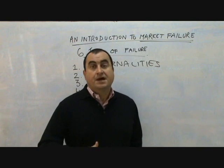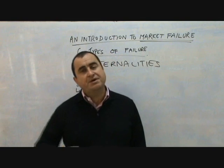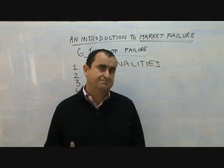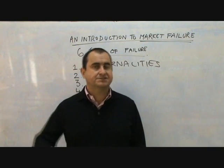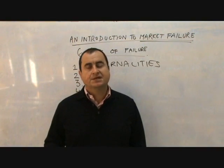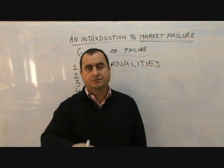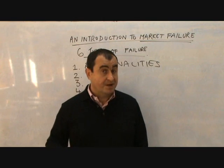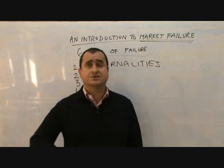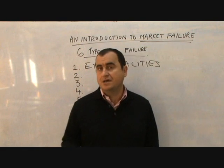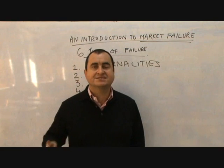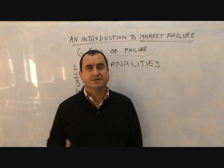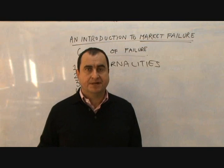When we undertake to buy or sell something, we only consider our private costs and benefits. We don't give any thought to the external costs and benefits. By ignoring external costs and external benefits, we lead ourselves through the market mechanism to the wrong level of output in a market. Some markets that create negative externalities include the tobacco industry, alcohol industry, and car use — all creating external costs, and we get overproduction in these markets if we leave it to the market mechanism.